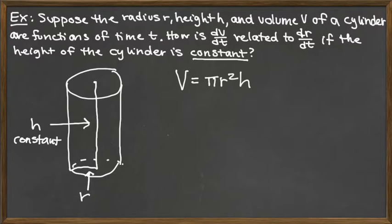Now that we have a relationship between v, r, and h, we take the derivative with respect to t of both sides, and that'll give us our relationship between the rates of change that we want.